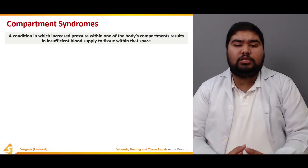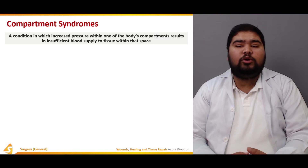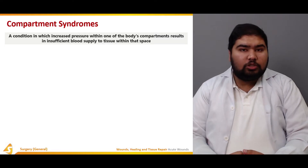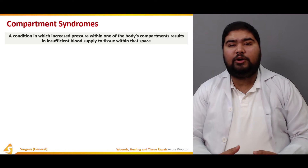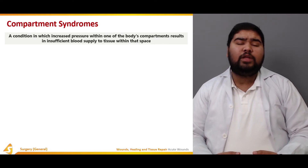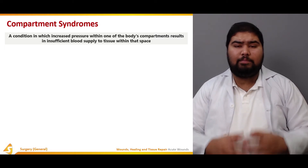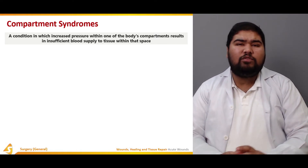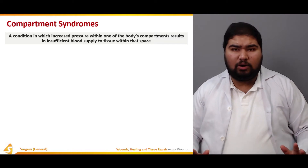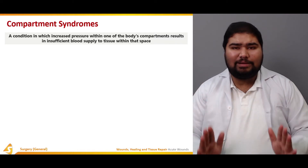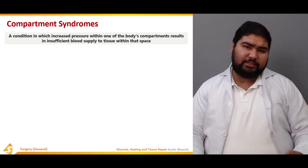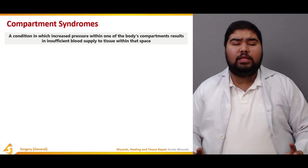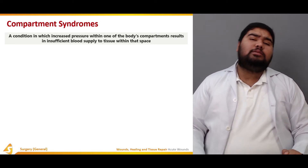Compartment syndromes are conditions in which increased pressure within one of the body compartments results in insufficient blood supply to tissues within that space. To understand compartment syndrome, visualize a compartment — let's say a box. A box has a specific volume. If you increase the pressure on that box, the volume can compress itself to a certain limit. When the pressure is further increased, any lumen in the volume might be compressed and the lumen might be occluded.